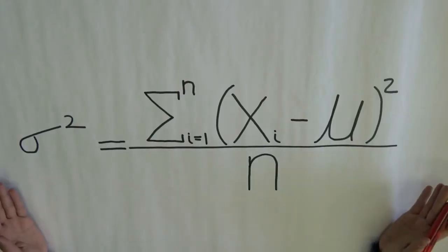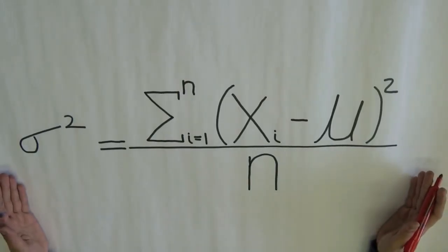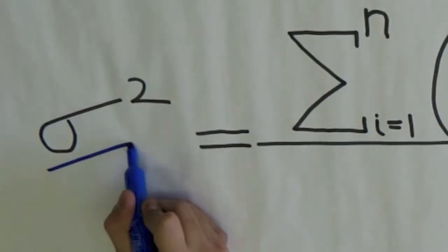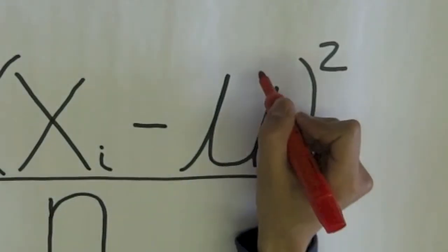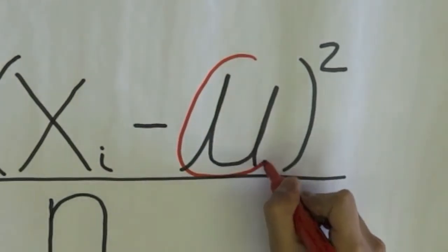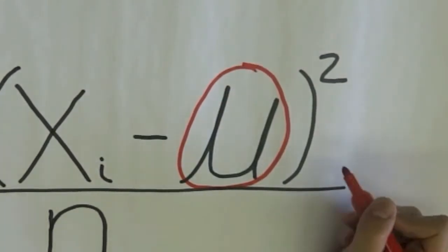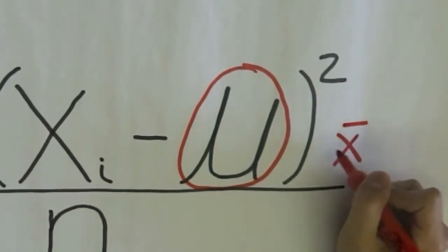We are now going to talk about population variance. This formula is used to calculate population variance. I have differentiated my population variance from my sample variance by using sigma instead of s. Note that I have used population mean mu, which is not equal to my sample mean x bar. Mu is a representation of population mean.